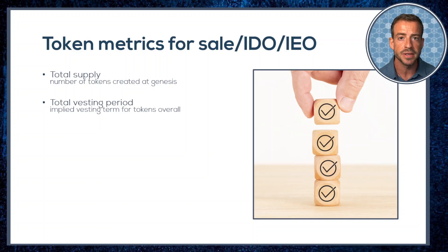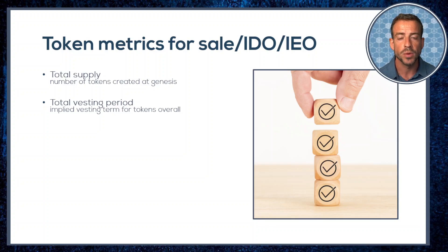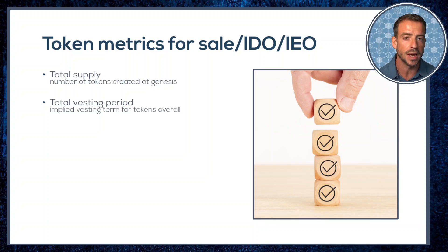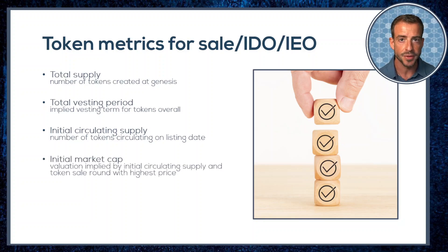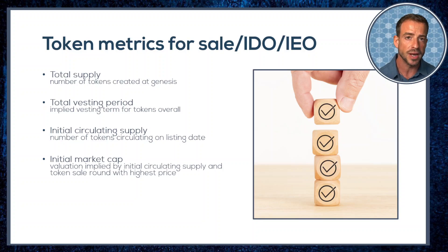Next is the total vesting period — the total vesting term for all allocations when viewed as a whole — which tells us when the last token in that initial total supply is released. Then there's the initial circulating supply, the number of tokens that will be circulating on the listing date, and the initial market cap: the market capitalization given by that initial circulating supply at the price of the highest investment round.